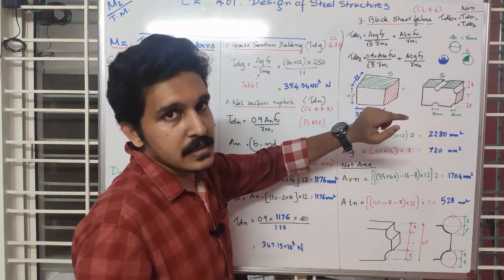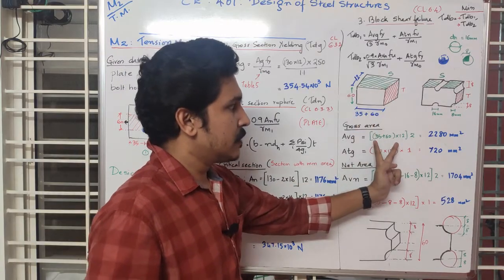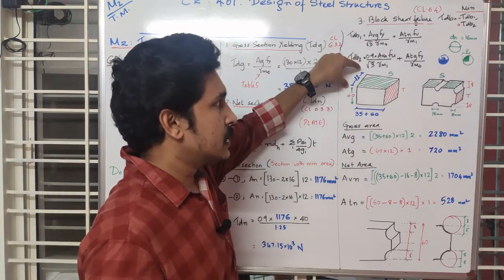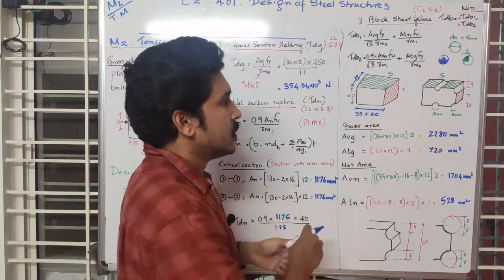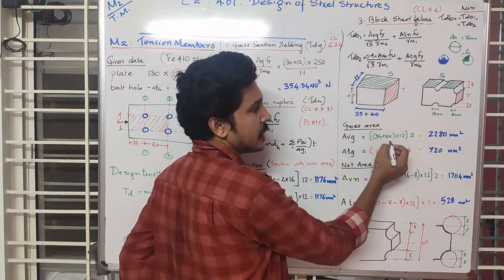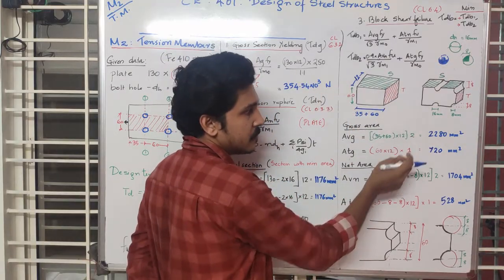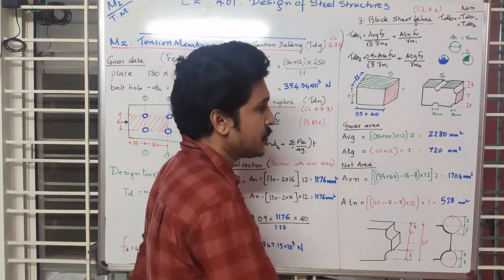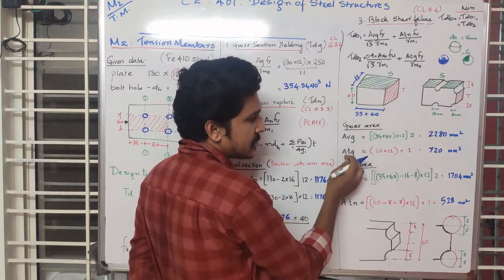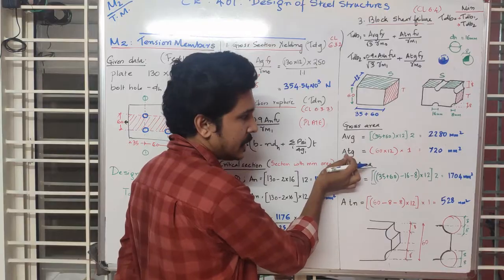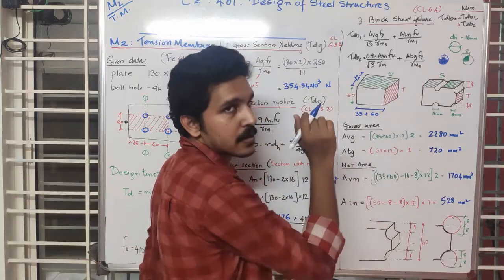For the shear plane, length is 35 plus 60 mm and thickness is 12 mm, giving AVG equals 35 plus 60 into 12. Since there are two shear planes, we multiply by 2. AVG equals 2280 mm².